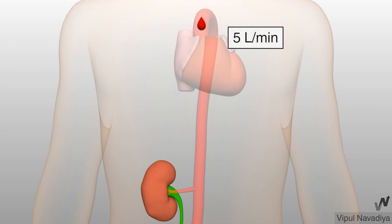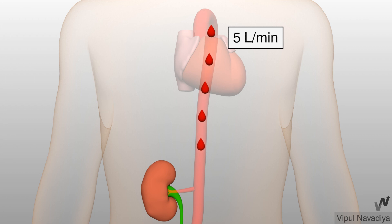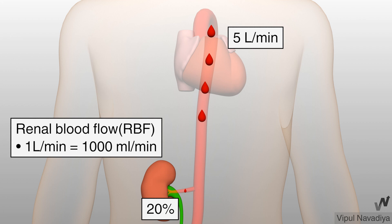The heart pumps about 5 litres of blood every minute. About 20% of which is received by the kidneys. Thus, renal blood flow is approximately 1 litre or 1000 ml per minute. These 1000 ml is the total blood received by both kidneys, although I am showing only one kidney here.